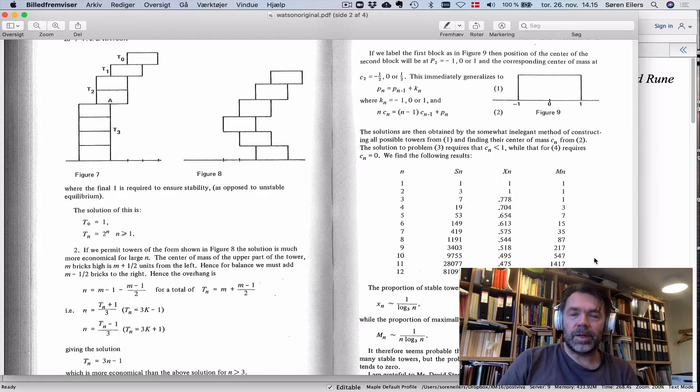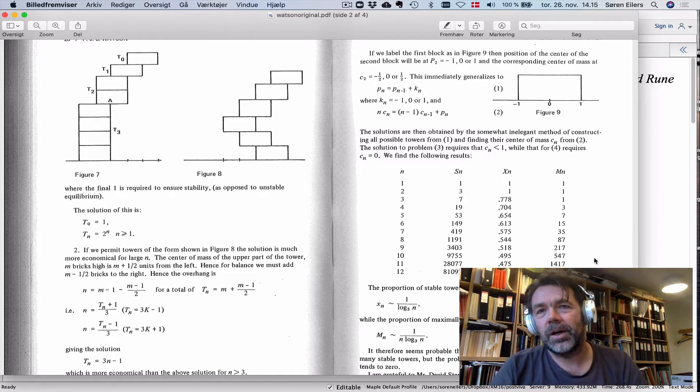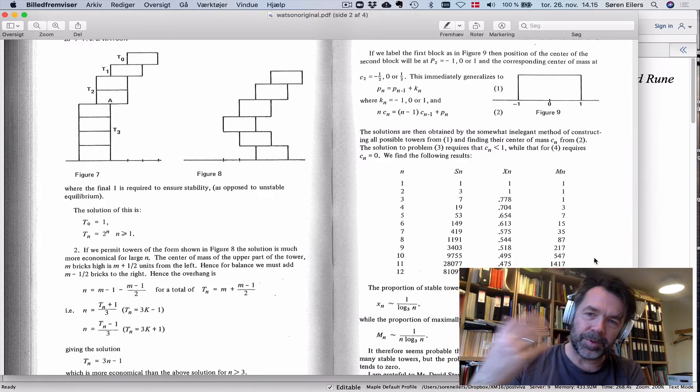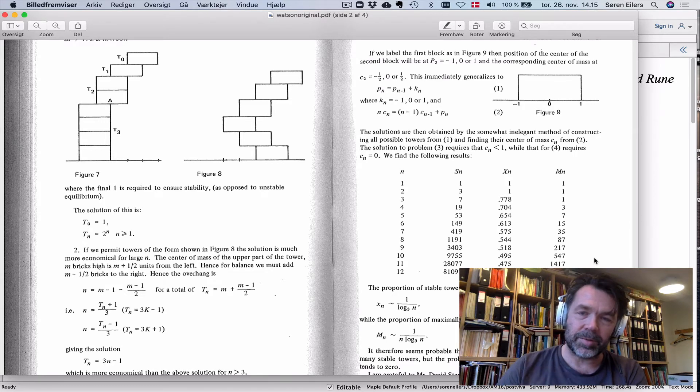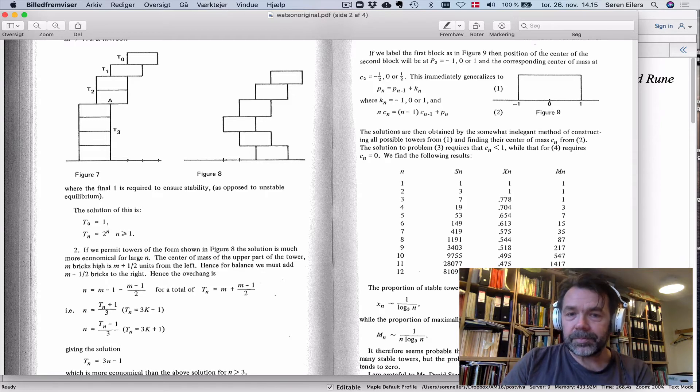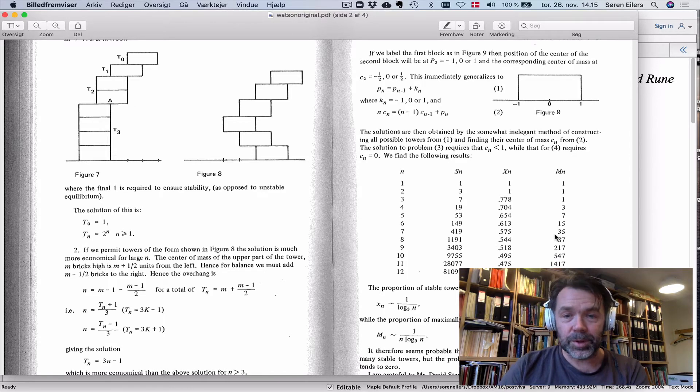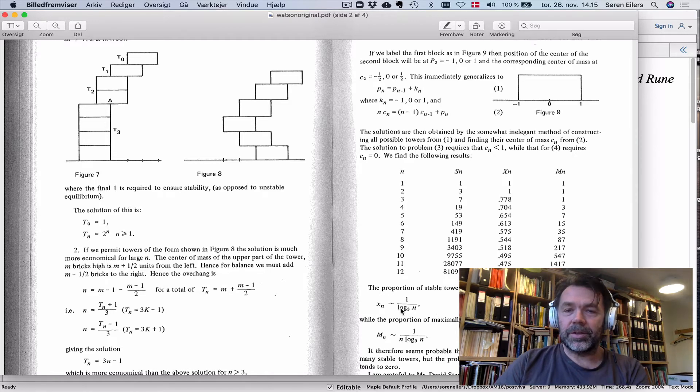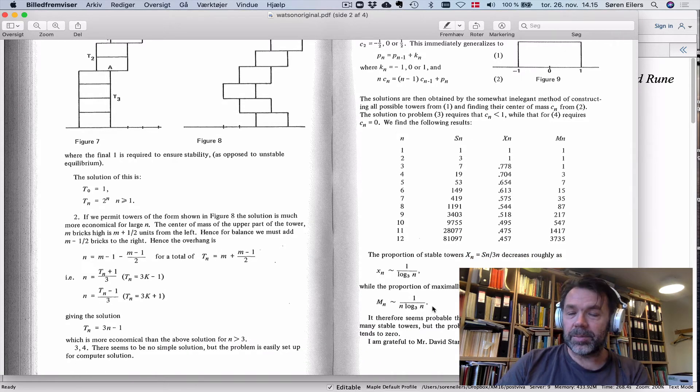He's interested in the question of what is the proportion of such buildings being stable or maximally stable. He takes the number of maximally stable buildings and divides by 3^(n-1). From looking at this data computed on a microcomputer, he comes up with conjectures: the fraction of stable towers is 1/(log₃ n), and 1/(n log₃ n) for the maximally stable ones.